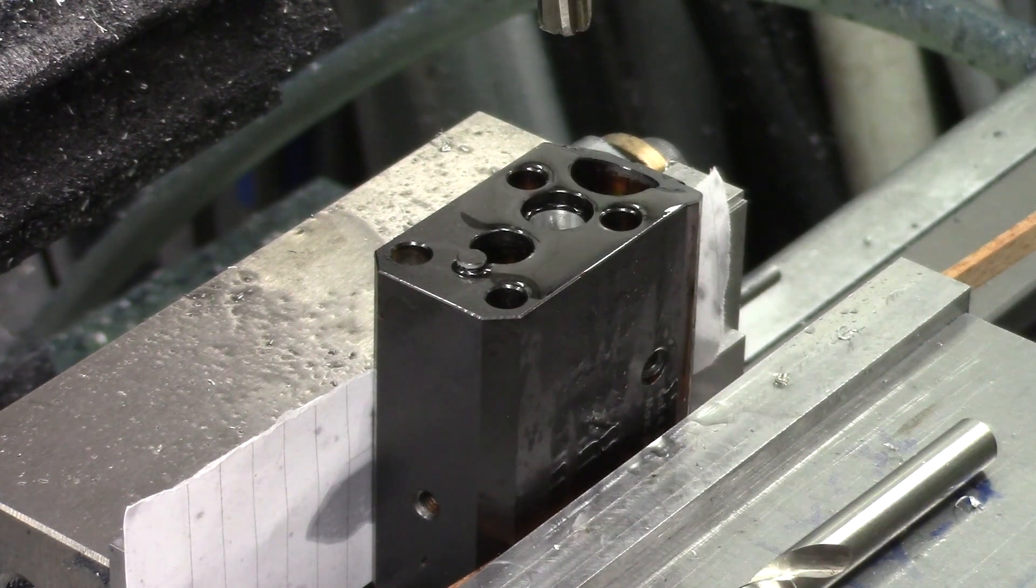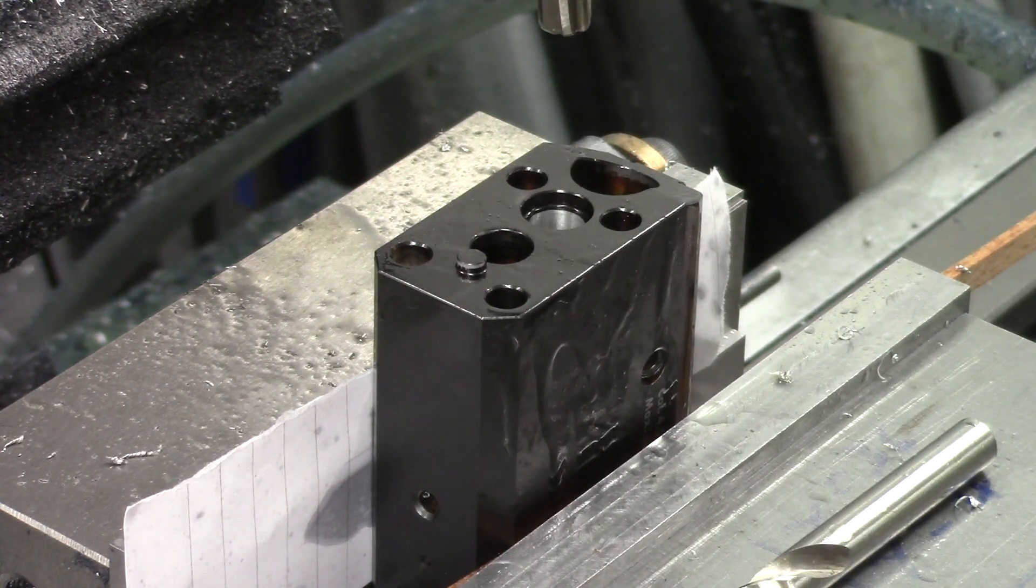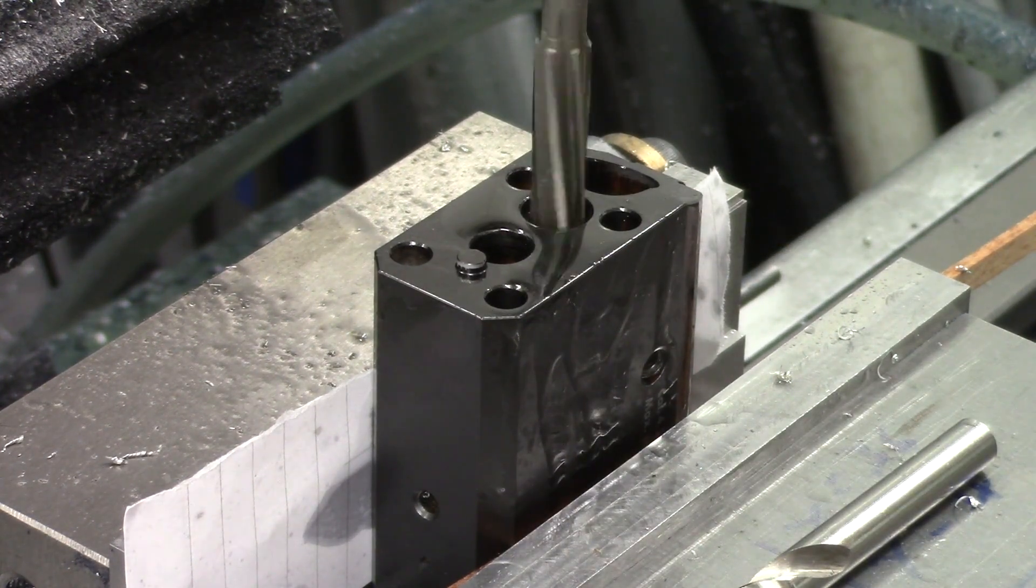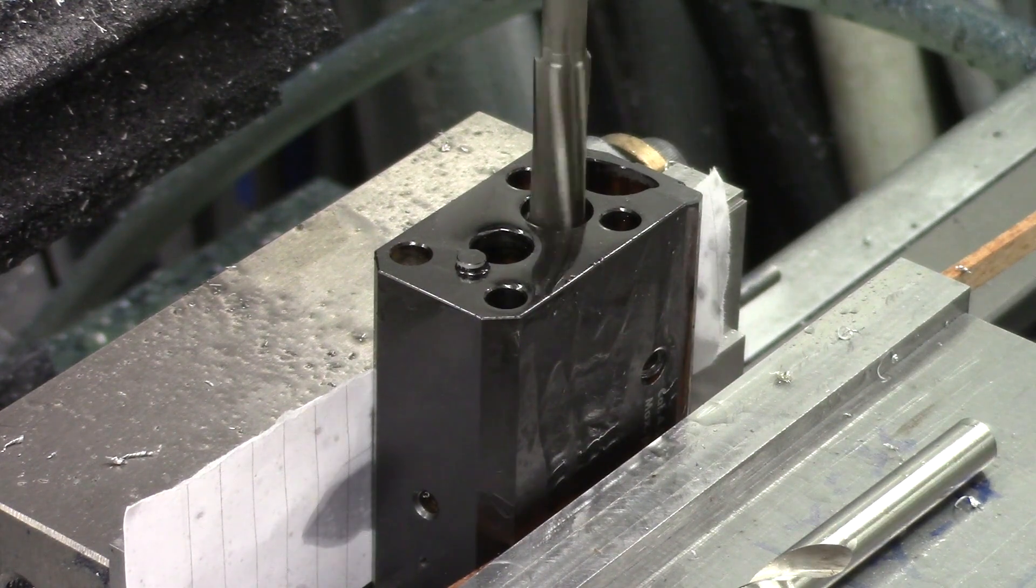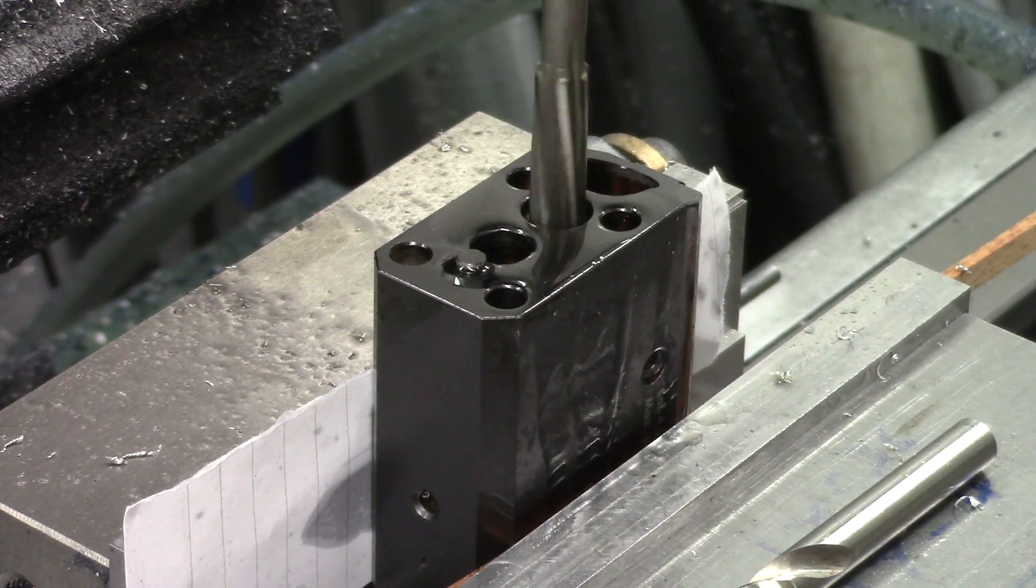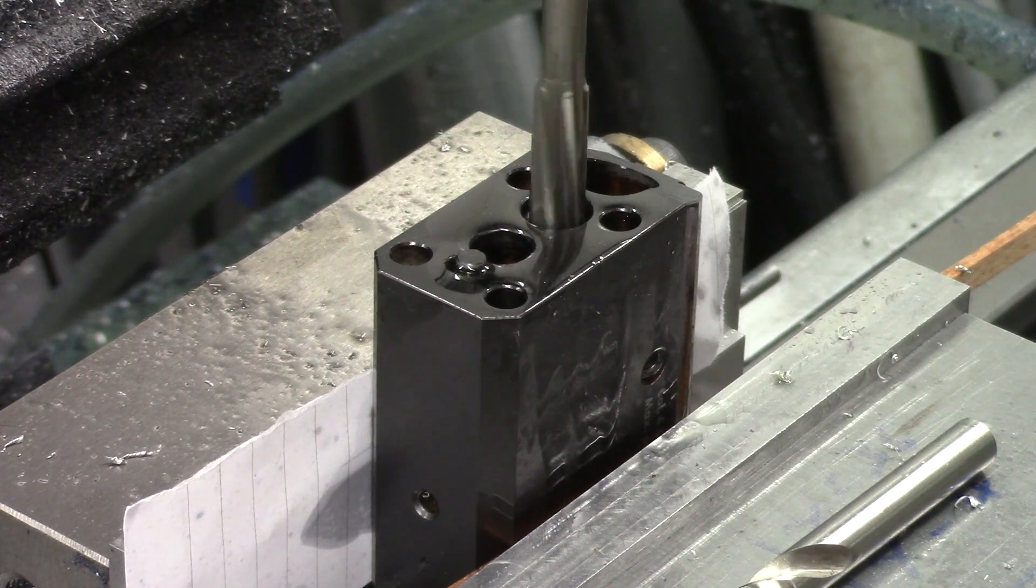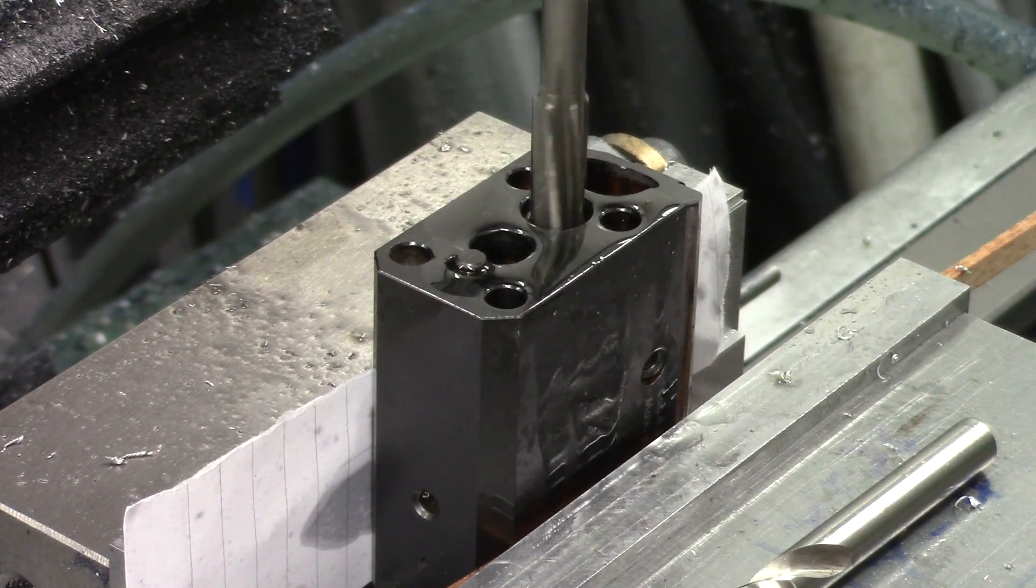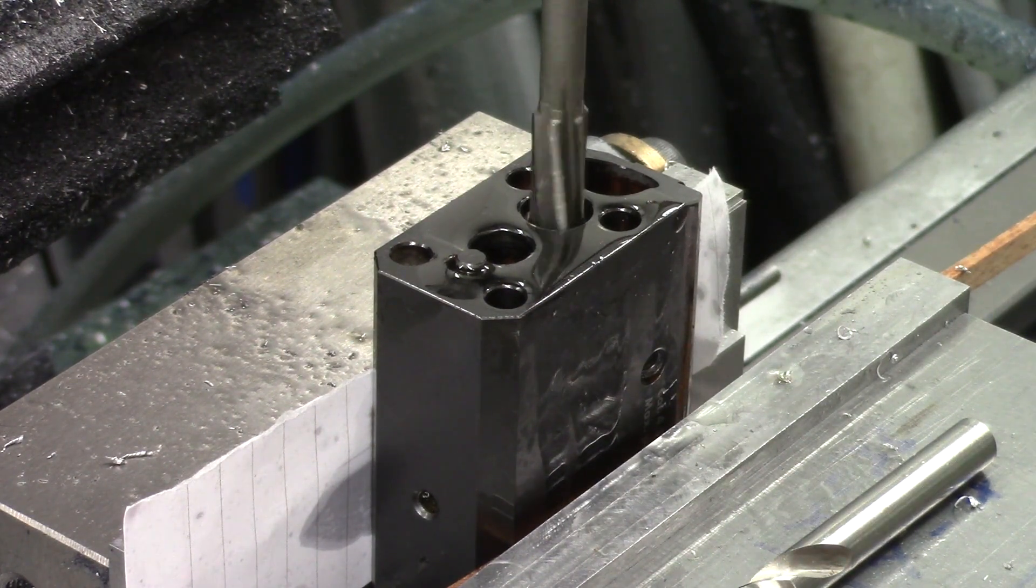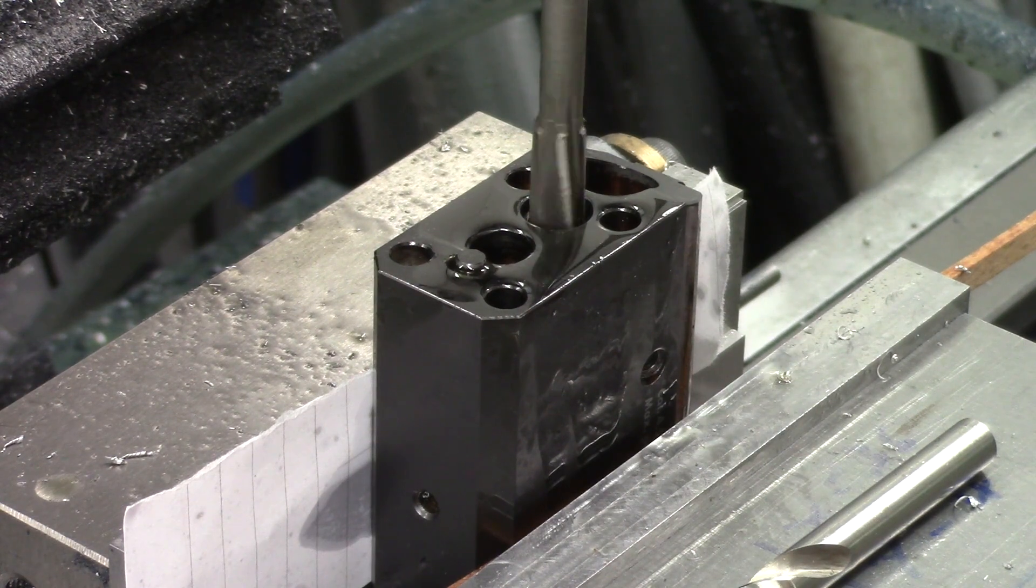And to give the reamer the best chance of producing a nice smooth surface finish, we're flooding the hole out with oil to firstly wash away any chips that may get stuck between the reamer flutes and the sides of the hole, and secondly, to provide a little extra lubrication for the back edges of the reamer that are going through the already reamed hole.